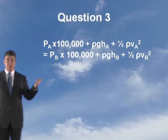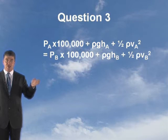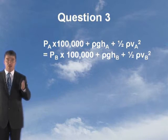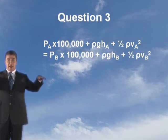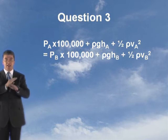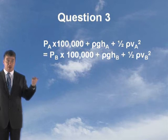So now you can substitute it into the velocity energy. Once you've got the velocity, you can work out velocity energy. This is the formula for bar. PA times 100,000 plus ρghA plus half ρVA squared equals PB times 100,000 plus ρghB plus half ρVB squared. Now don't forget, wherever you take the datum line, centre of the pipe, what happens to the potential energy? Zero at both points. No potential energy. You can cancel it out.